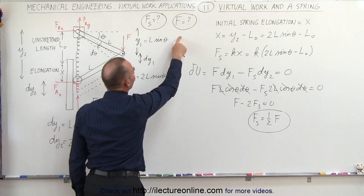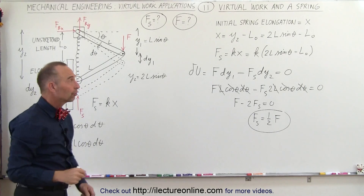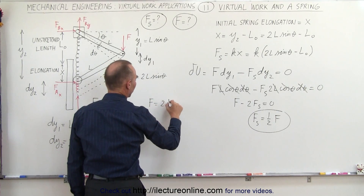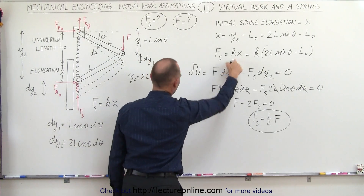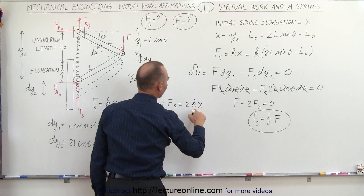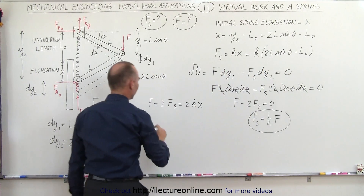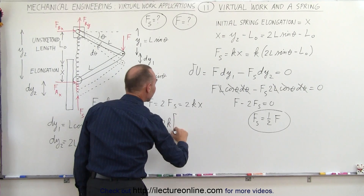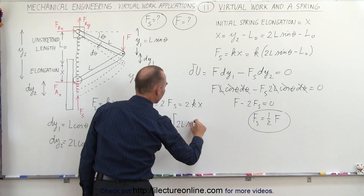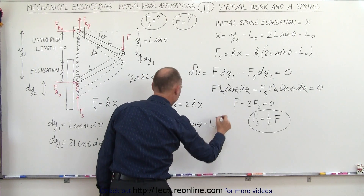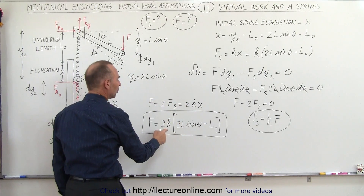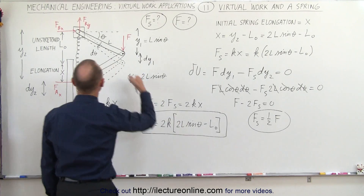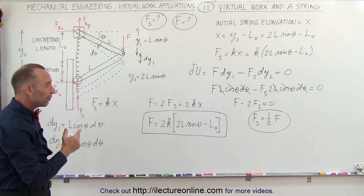Next, we find the applied force in terms of the angle and the spring force. Since F equals 2Fs and Fs equals kx, we get F equals 2kx. Substituting x equals 2L sine theta minus L sub-naught, the applied force F equals 2k times (2L sine theta minus L sub-naught). This gives the force required to move the system as a function of spring constant, beam length, original spring length, and angle theta.